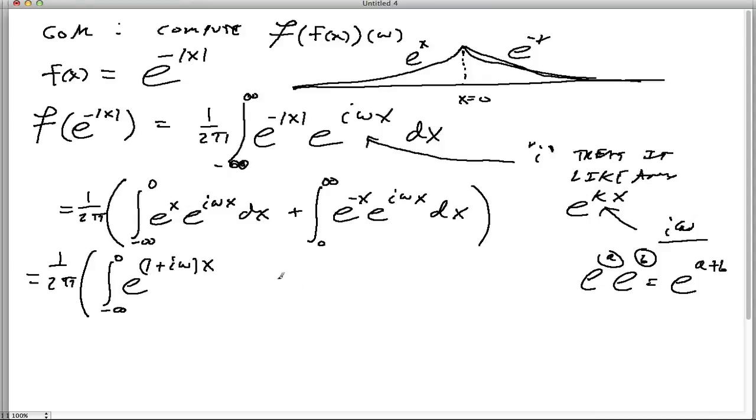And so we can do that. 1 over 2 pi. And go like here, like such. So we'll now go 1 plus i omega. And put that x out in the front there. We factor the common factor of x out, dx.